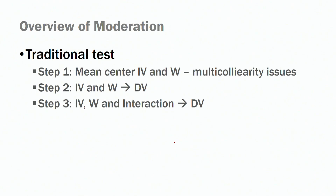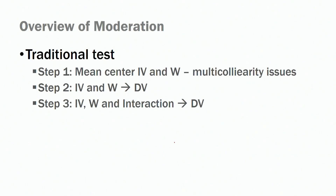In step one, you have to mean center your independent variable and your moderator, especially if they are continuous variables. If they are categorical, like gender, you don't need to center the moderator. But if there are continuous variables, like job meaningfulness or organizational identification, you have to center. The reason is we need to avoid multicollinearity issues. The way we create a moderator variable is by multiplying your independent variable and the moderator — you create an interaction term — and when you do that, the correlations tend to be really high.